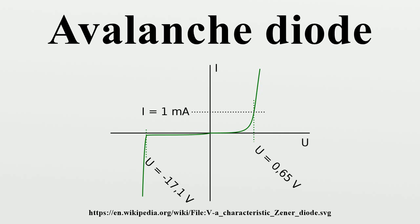Because the avalanche breakdown is uniform across the whole junction, the breakdown voltage is more nearly constant with changing current compared to a non-avalanche diode. The Zener diode exhibits an apparently similar effect in addition to Zener breakdown. Both effects are actually present in any such diode, but one usually dominates the other. Avalanche diodes are optimized for the avalanche effect, so they exhibit a small but significant voltage drop under breakdown conditions.